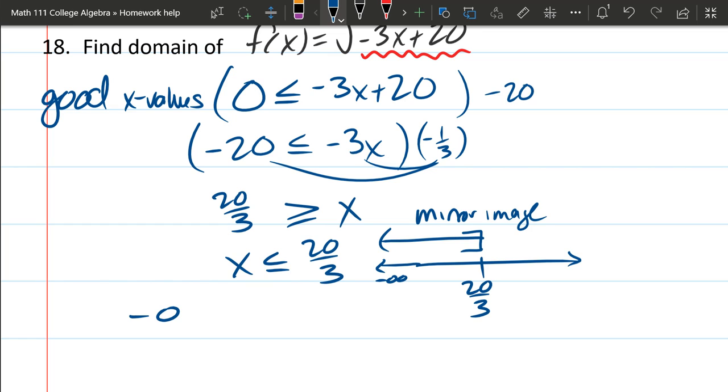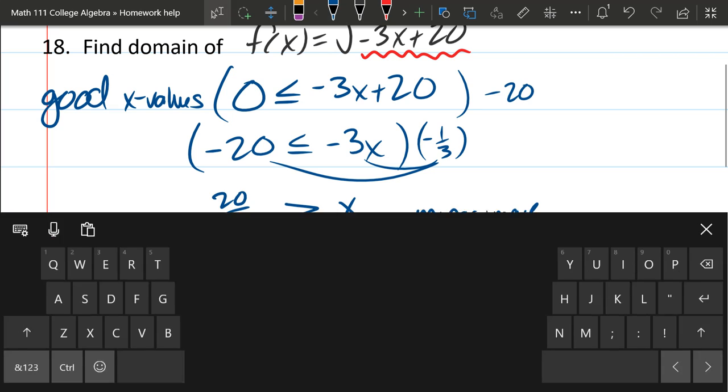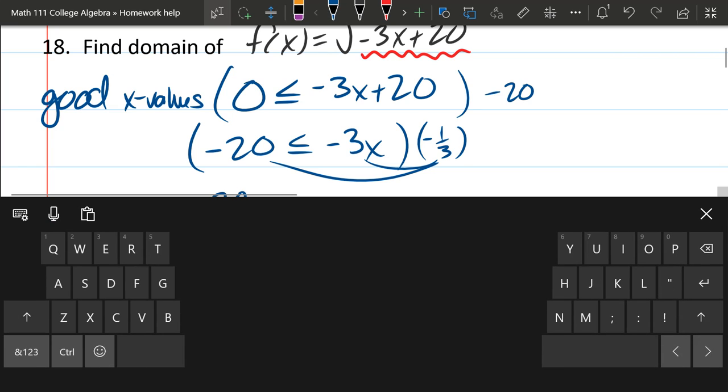In interval notation, it will be negative infinity, comma, 20 thirds, closed at 20 thirds, because again, you're allowed to equal. And it's always gonna be open at the infinities. So that will be your answer for this question here.